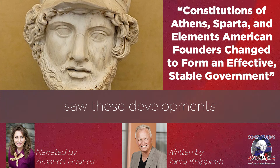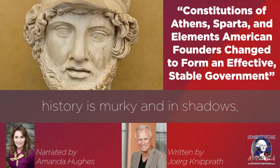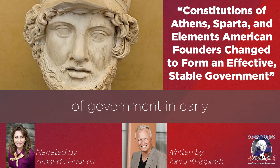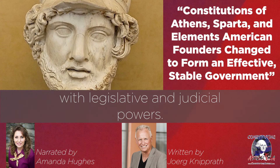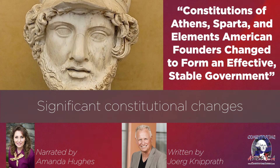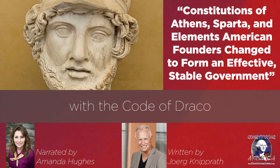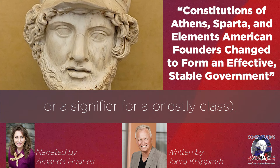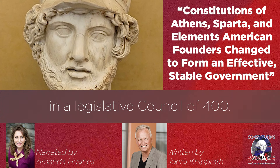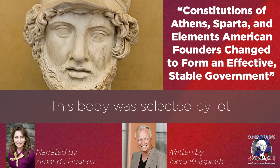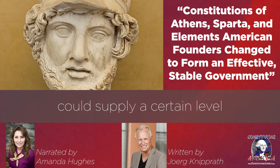While much of this history is murky and in shadows, apparently the major power of government in early Athens was in the Areopagus — a council of aristocratic elders with legislative and judicial powers. Significant constitutional changes in Athens began in 621 to 620 B.C. with the Code of Draco, who may have been an individual or a signifier for a priestly class, which solidified the powers of the holders of large estates in a legislative council of 400. This body was selected by lot from the class of those who, according to the Code, could supply a certain level of military equipment.